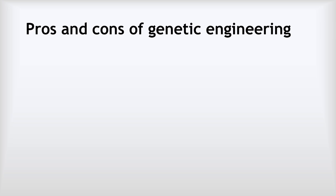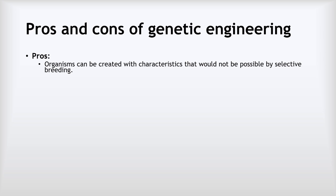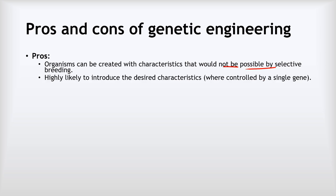In terms of pros of genetic engineering, the first is that you can create organisms that would simply not be possible by selective breeding. No amount of selective breeding could ever produce bacteria that make human insulin, or rice that makes beta carotene — it lets you do things there is simply no other way to achieve. Related to that, you are highly likely to introduce the desired characteristics provided they're controlled by a single gene. With selective breeding there's an element of luck, but with genetic engineering it's much more precise, provided the trait is controlled by a single gene.